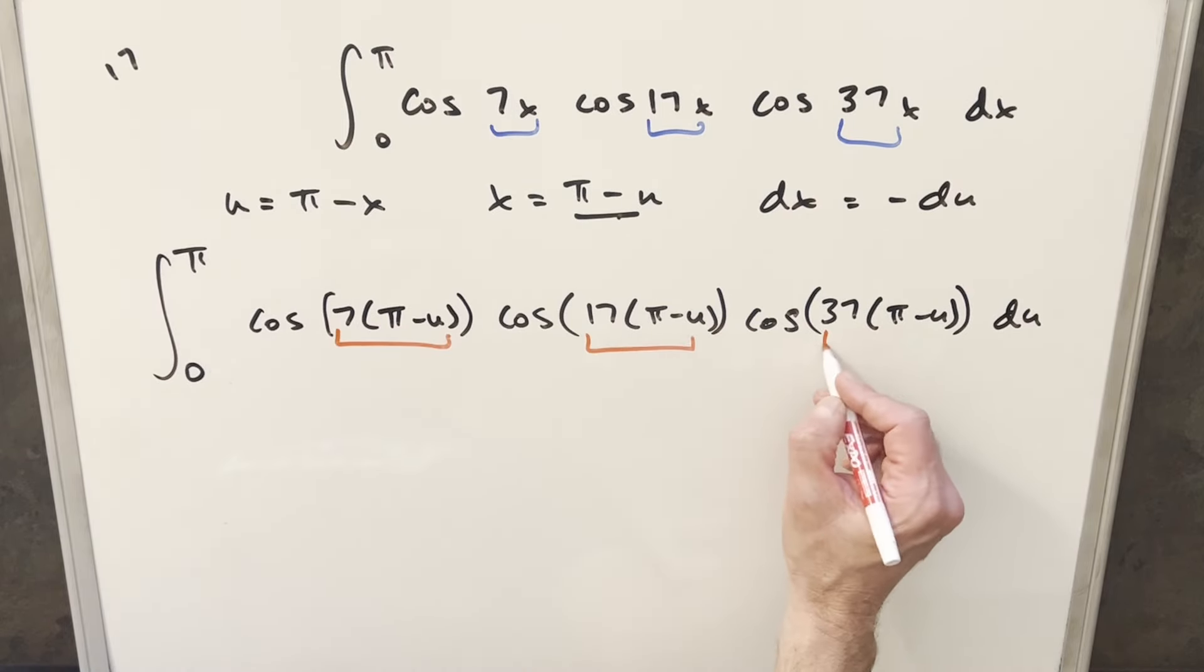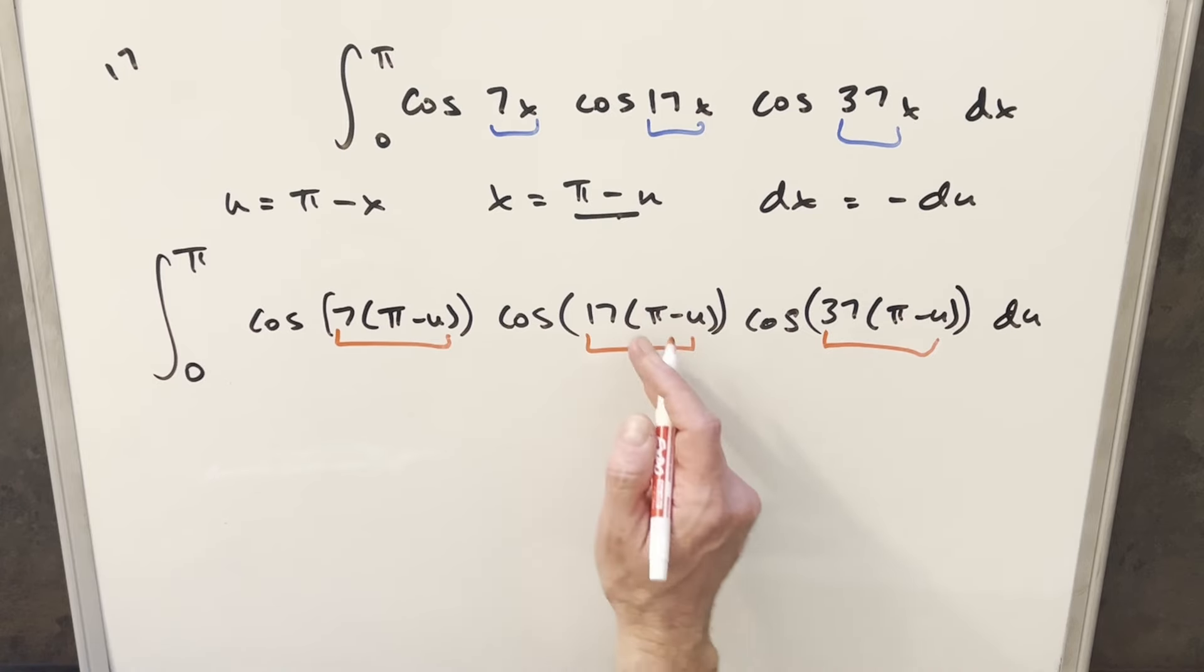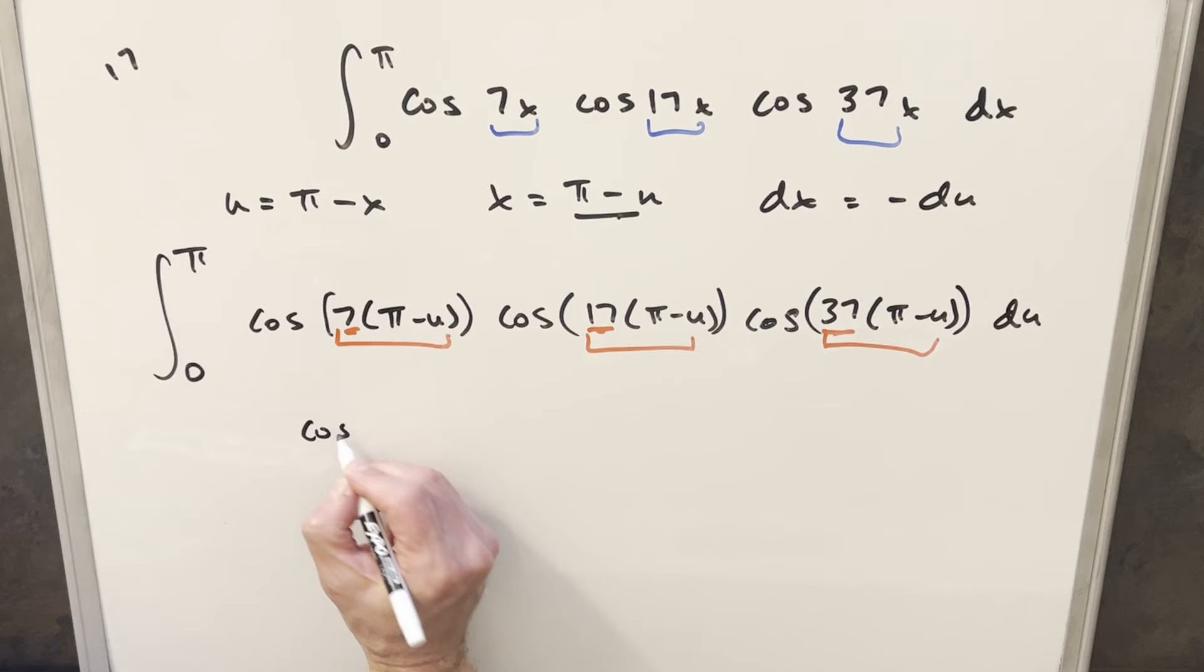And then the thing I noticed here is there's just a real similarity. Everything's cosine. The input to the cosine all looks kind of the same. And I think it's going to be important that in each case we have an odd number. So I think that's going to matter.